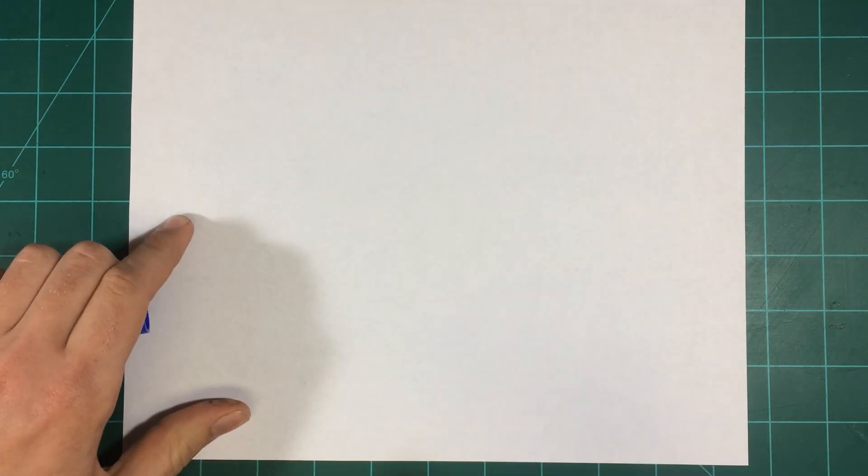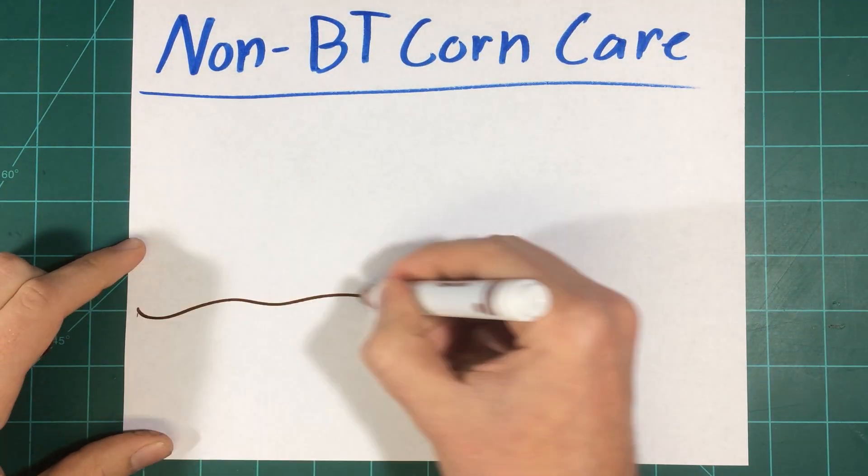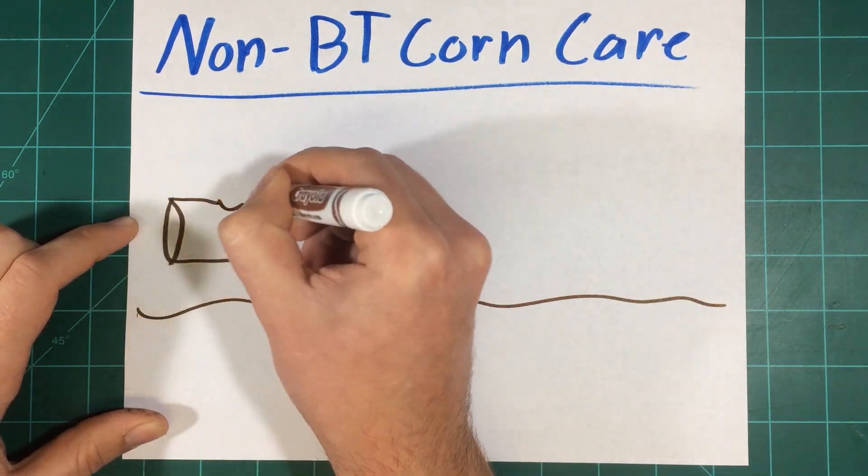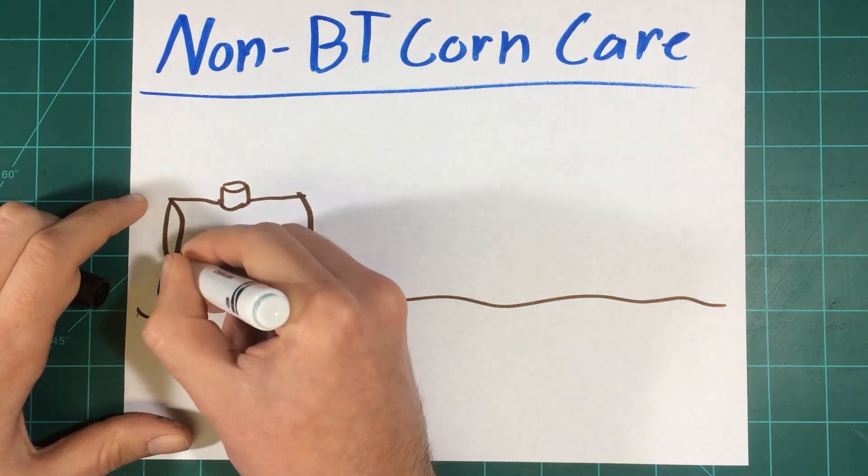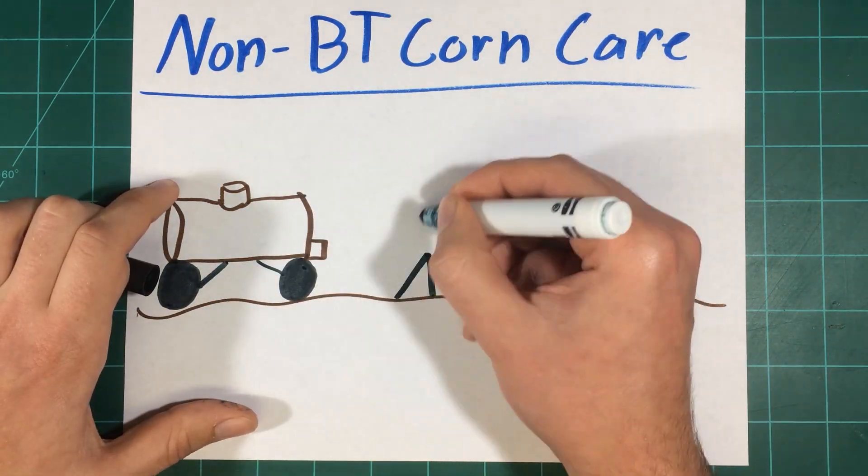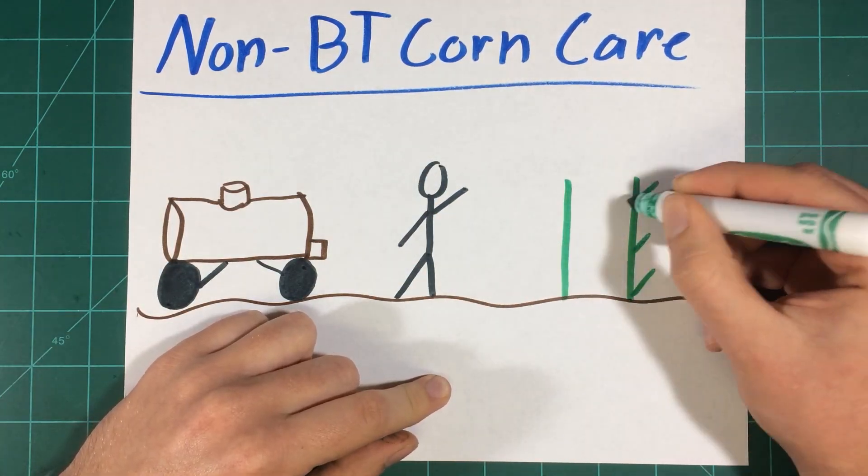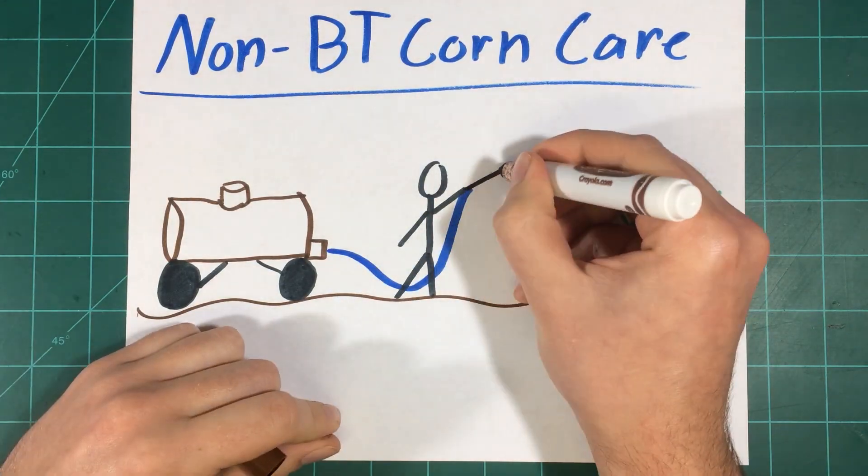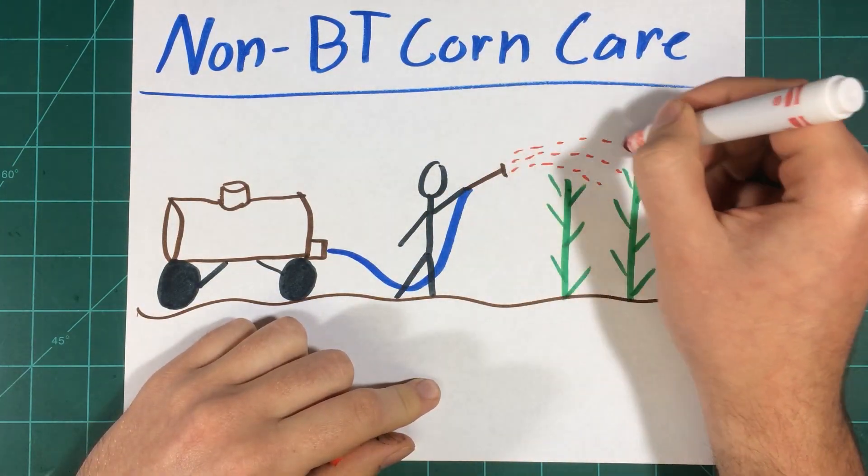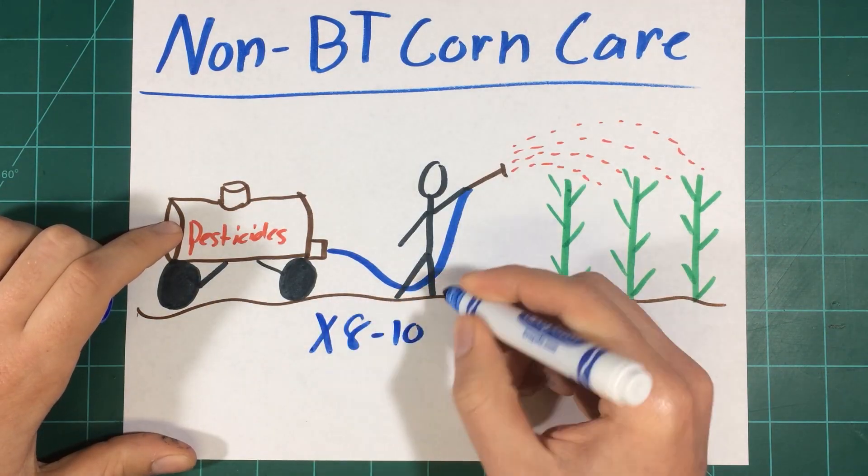First, BT sweet corn significantly reduces the number of required sprays to curb insect pest damage. It is important to note that while it has not eliminated pesticide application entirely, over the past 20 years, GMO crops have reduced the need for pesticide applications by over 37%. In Maryland, it is required for non-BT corn crops to be sprayed 8 to 10 times every season with pesticides to have even a chance at a harvest.